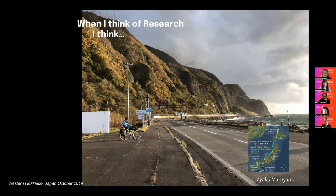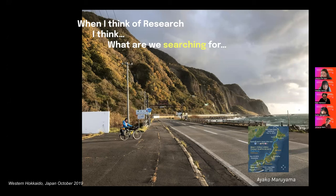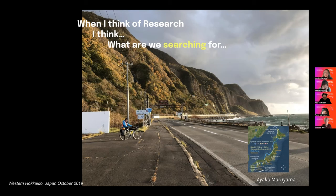When I think of research I think about what are we searching for. This is an image in western Hokkaido — my husband and I had the privilege of doing a bike tour over the course of a few months. I come with a lot of baggage — labels both as baggage and as power and privilege. I'm thinking a lot about how we employ or deploy various terms in order to be in these conversations, and then transforming them.